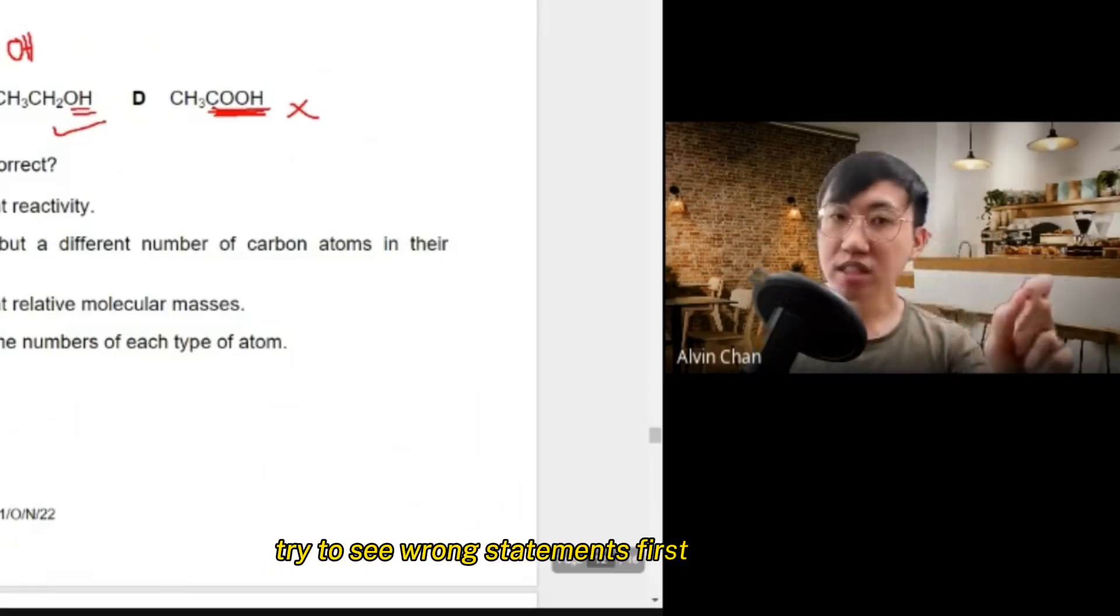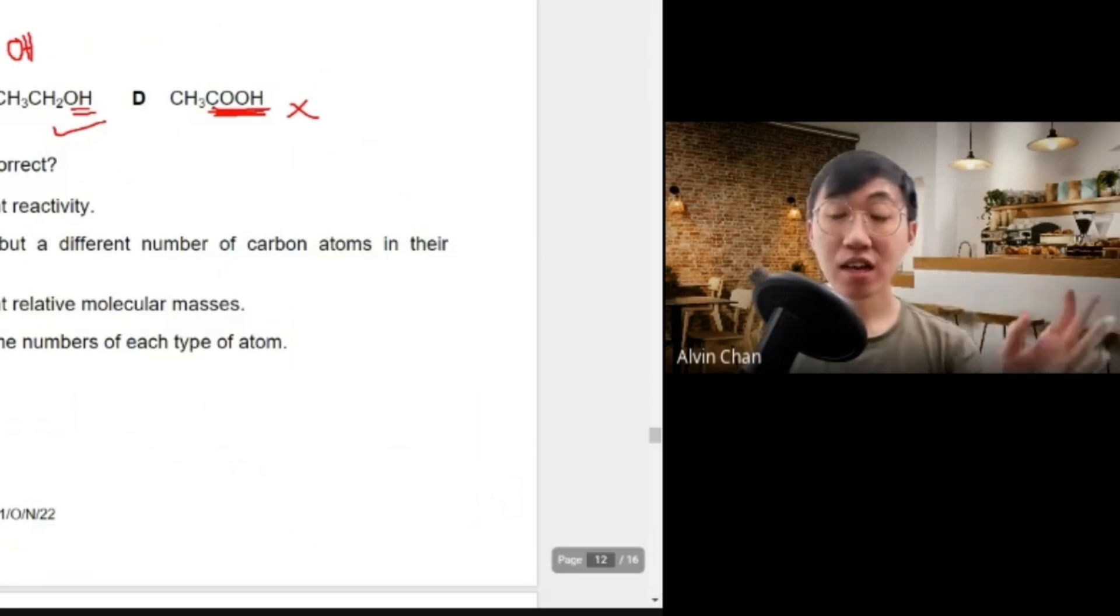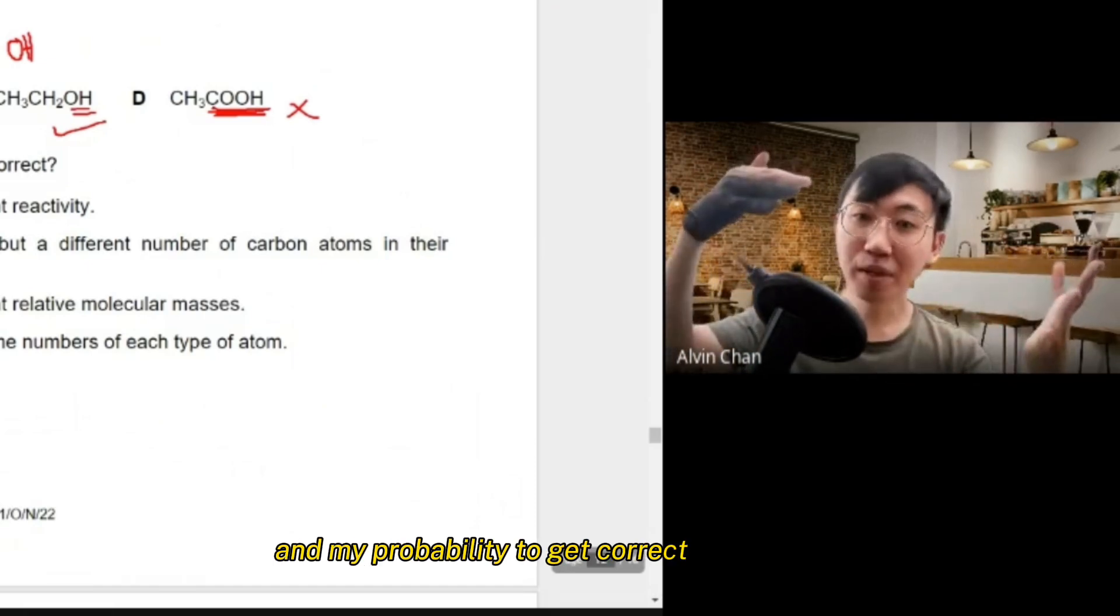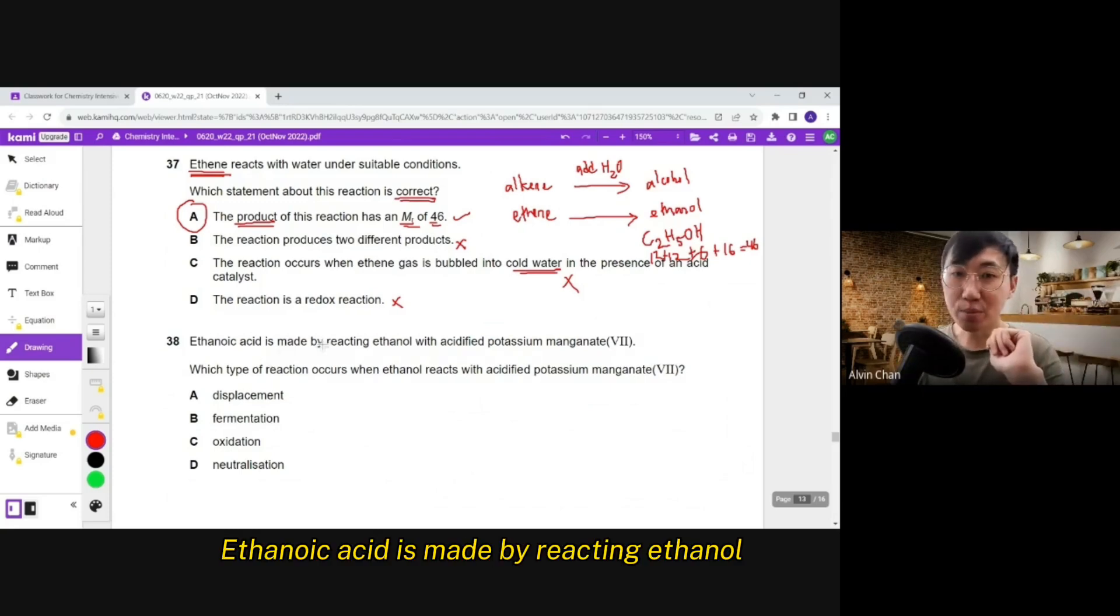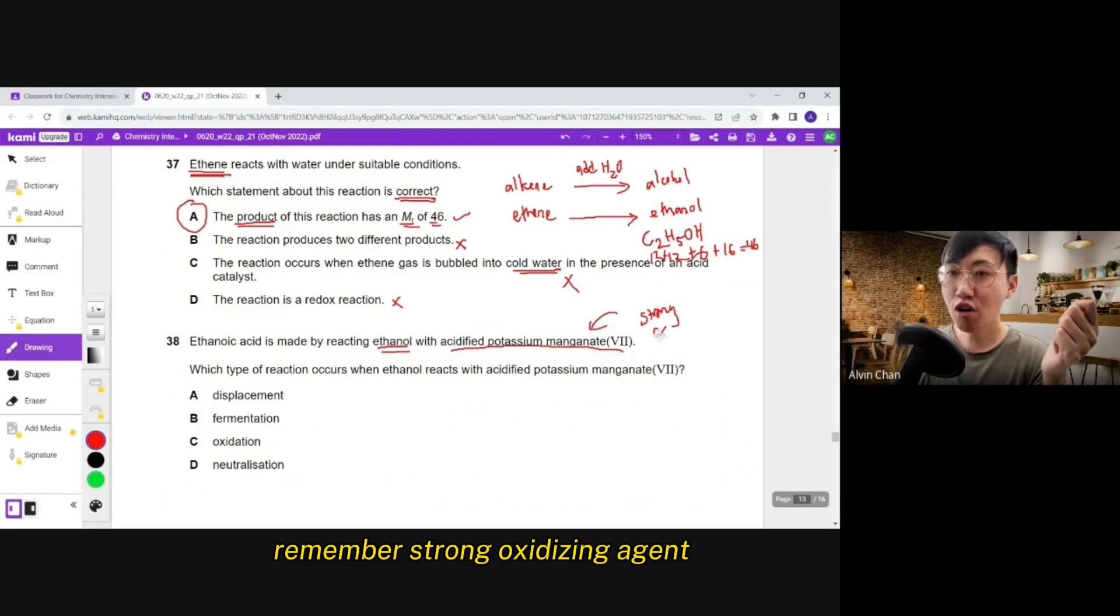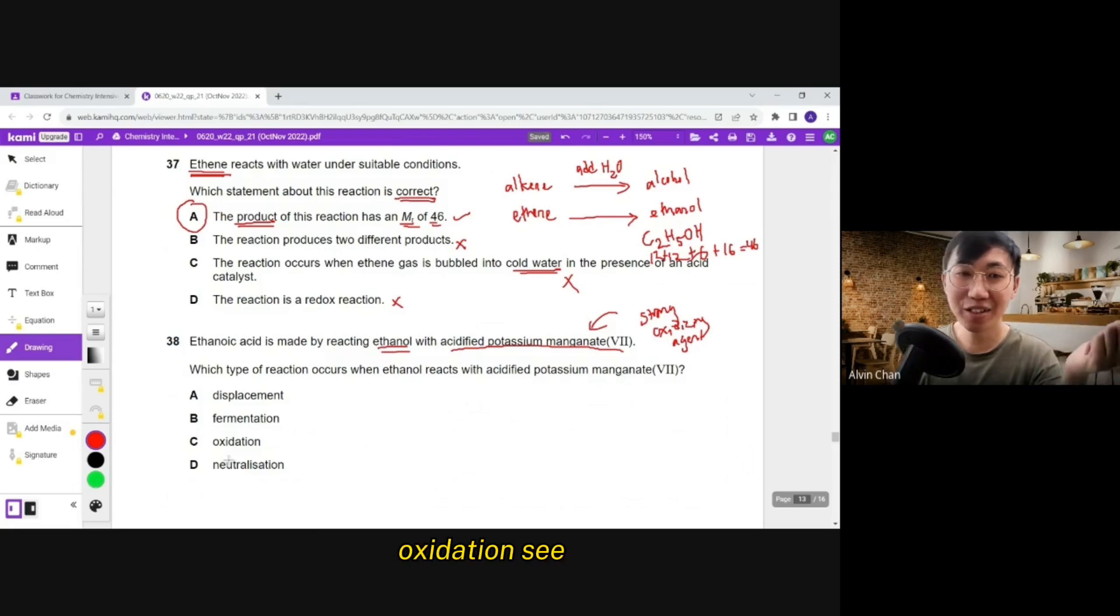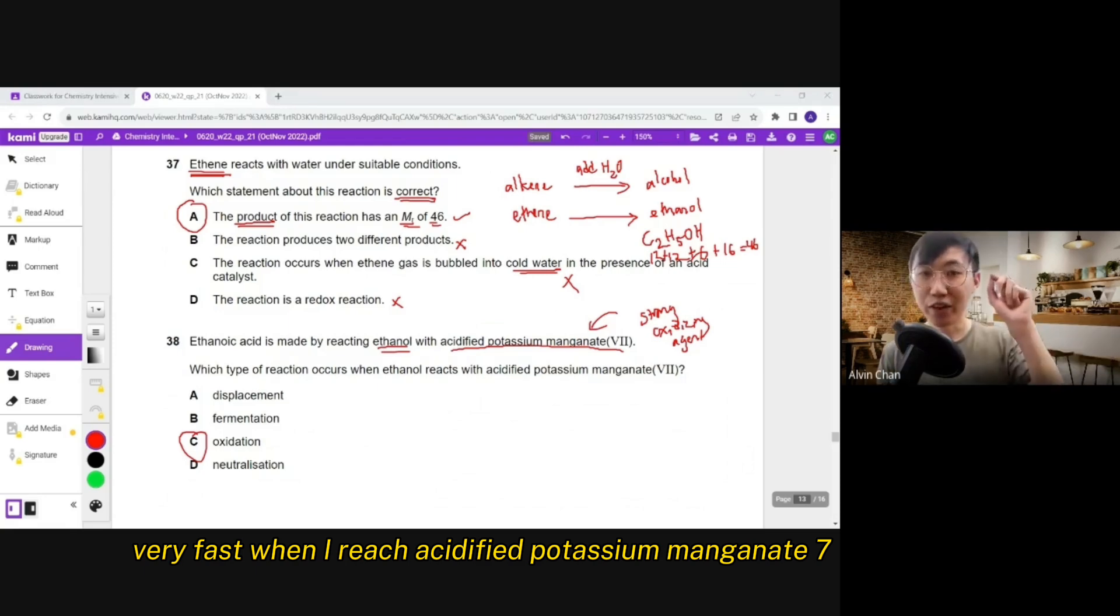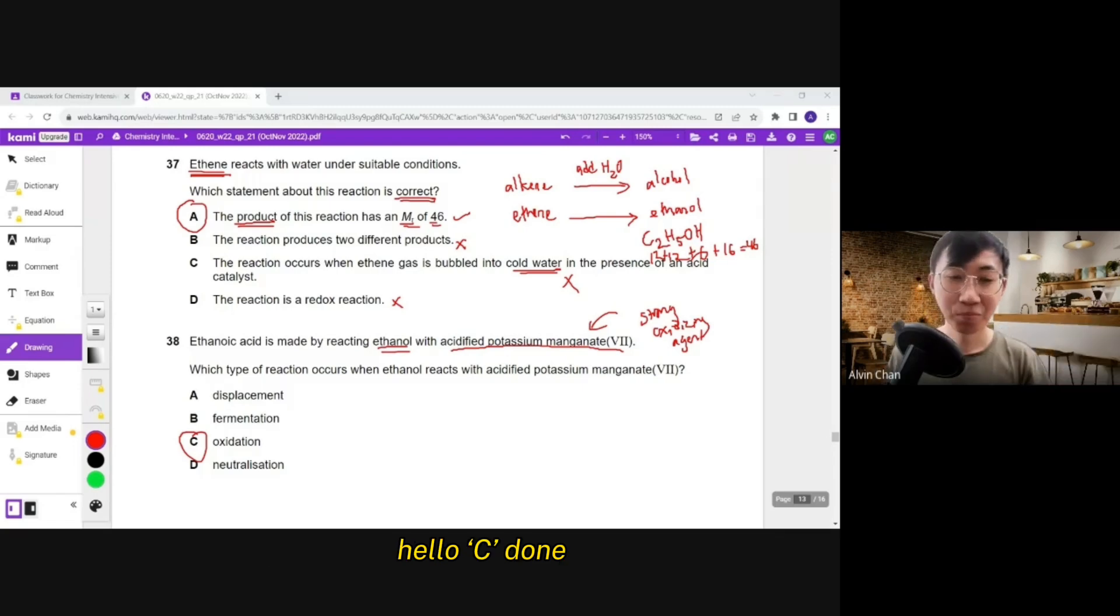When your paper 2, when you do, try to see wrong statements first. Did you guys get the idea from my side? I always find mistake first. That will increase my chance and my probability to get correct. So this is how I train my students. Ethanoic acid is made by reacting ethanol with your acidified potassium manganate 7. So this is your strong oxidizing agent. Remember strong oxidizing agent. What type of reaction occurs when ethanol reacts with this acidified potassium manganate 7? I already know the answer. Oxidation. C. Very fast. When I read acidified potassium manganate, my head says strong oxidizing agent. When I read the bottom question, hello. C. Done. Oxidation.